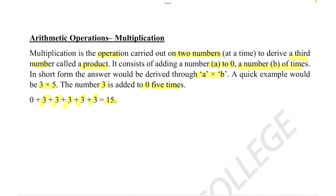For example, if you were supposed to do 6 times 3, that would just be 6 plus 6 plus 6, which equals 18.